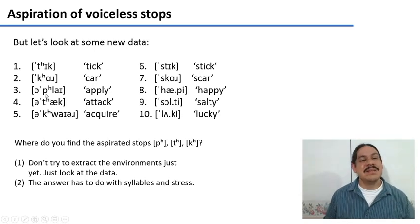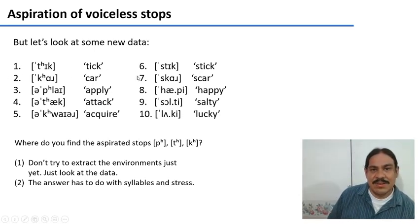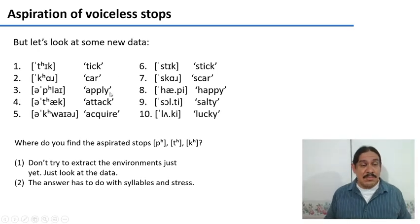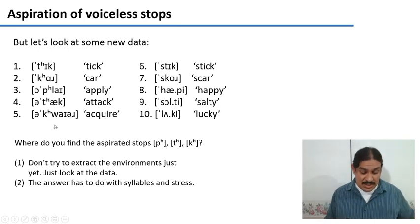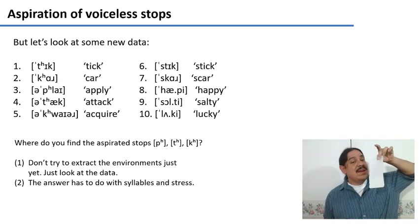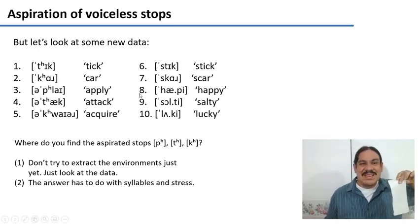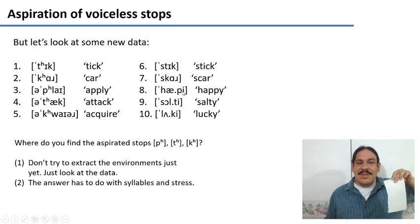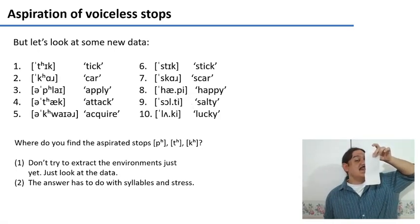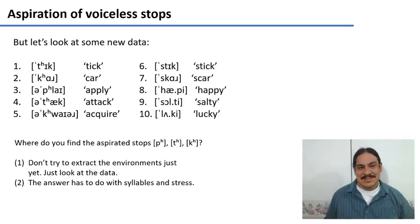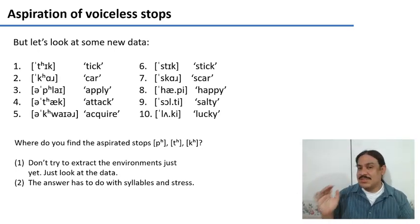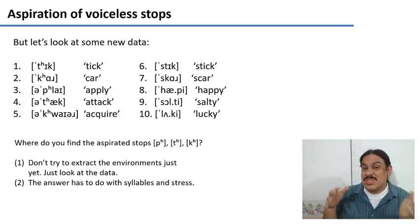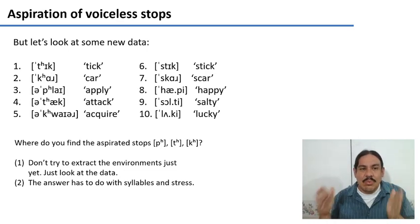Let's look at more data. Examples one, two, six, and seven are repeated from before, but I've added more examples. Words three, four, and five have aspirated consonants in the middle of a word — like 'apply,' 'attack,' 'acquire.' Examples eight, nine, and ten have unaspirated consonants in the middle — as in 'happy,' 'salty,' 'lucky.' Again, look at the data in terms of syllables and stress, and try to figure out where we find the aspirated stops. Please pause the video.